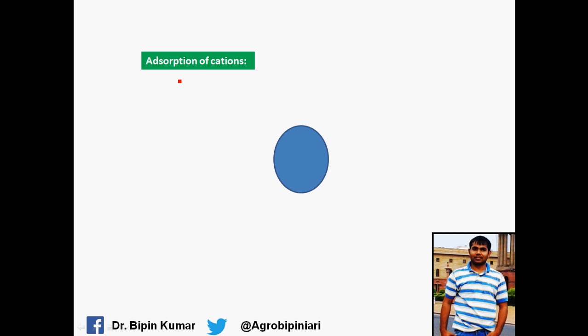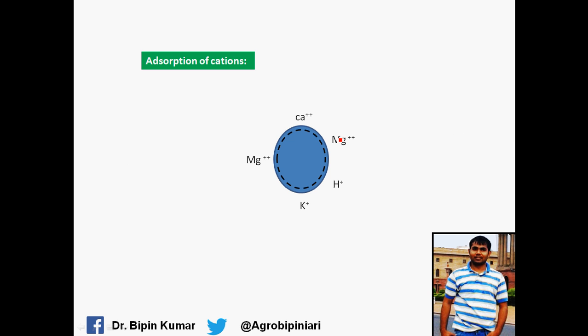Another property is the adsorption of cations. The inner core of the colloid is mostly dominated by negative ions, and because of these negative ions, the colloid has the property of adsorbing positive ions on the outer layer. This property is called adsorption of cations.